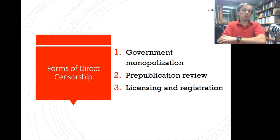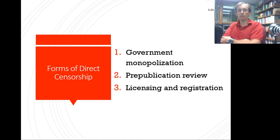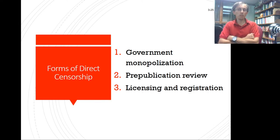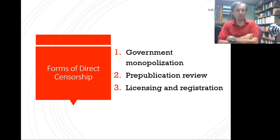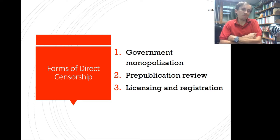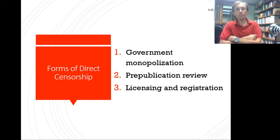Censorship has existed throughout history. There are three major forms of direct censorship: government monopolization, pre-publication review, and licensing/registration. Government monopolization — the Soviet Union is a classic example — means the government owns all TV stations, radio stations, and newspapers, and nothing passes without government censor approval. It still exists in North Korea today. In the Soviet Union, private organizations couldn't even own a photocopier.